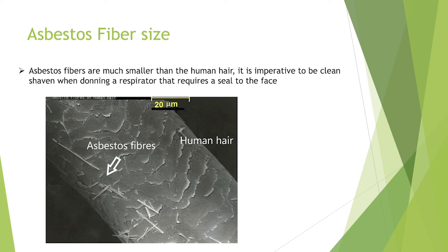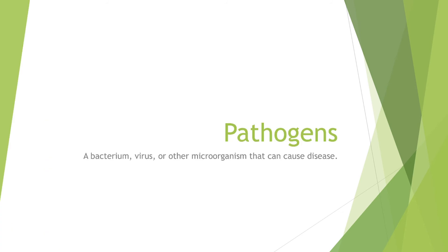You have to be clean shaven when wearing a respirator — here's why: when a respirator is fit tested, it must have a 100% seal to your face for that 99.7% efficiency to be accurate. Looking at this image, a human hair is about 70 micrometers across, whereas an asbestos fiber is less than one — possibly even 0.5 — micrometers. If you aren't clean shaven, these fibers will have no problem bypassing the mask.